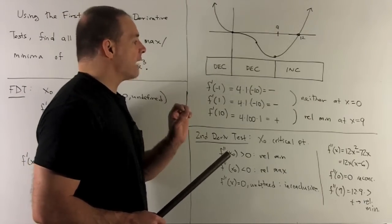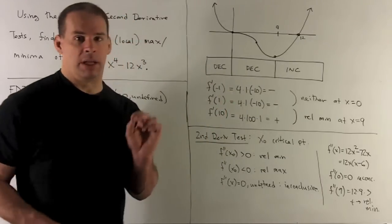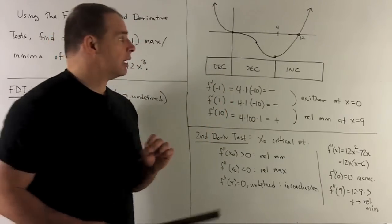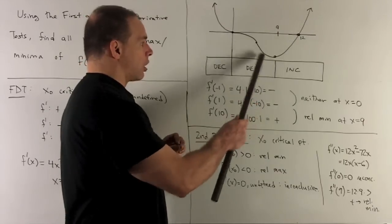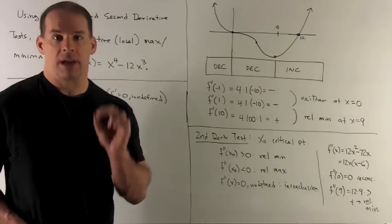If you look at the graph, you see here around 0, we're not going to have either a relative minimum or maximum. And then if I look around our graph at x = 9, we're getting a relative minimum as promised.